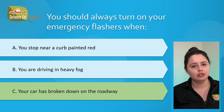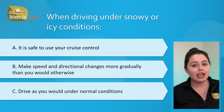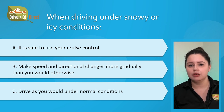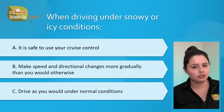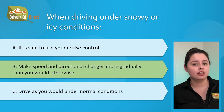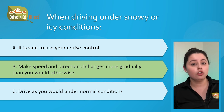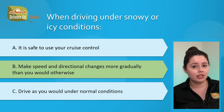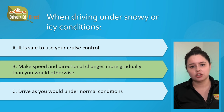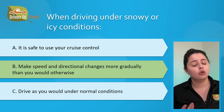Question number twenty-three: when driving under snowy or icy conditions. A) it is safe to use your cruise control, B) make speed and directional changes more gradually than you would otherwise, or C) drive as you would under normal conditions. The correct answer is B, make speed and directional changes more gradually. Always adjust your speed slower to account for poor traction on snow or ice — this applies to acceleration and deceleration. To avoid skidding, use gentle pressure on the gas or brake pedals, and go more slowly when making turns or lane changes.